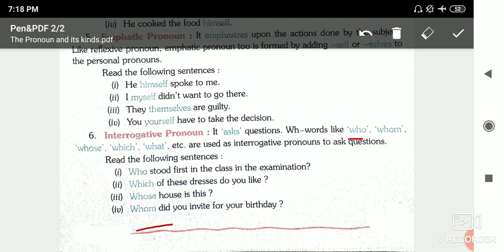Whom did you invite for your birthday? I will tell the names of friends I invited, relatives I invited. Any person's name - those naming words are nouns. So these are the kinds of pronouns.